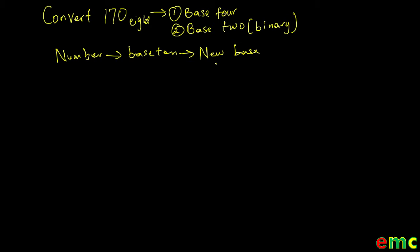Now let's go to an example. We want to convert 170 from base 8. We want to convert it to base 10, which is our first step. To convert numbers from one base to base 10, you multiply each digit of that number by its corresponding place value. Since we are dealing with base 8, the place values are 8 raised to the power of 0, 8 raised to the power of 1, and 8 raised to the power of 2.